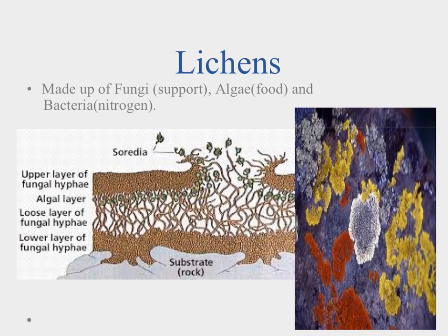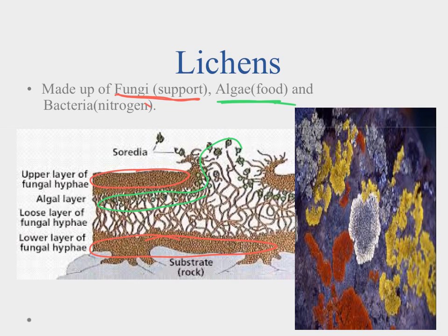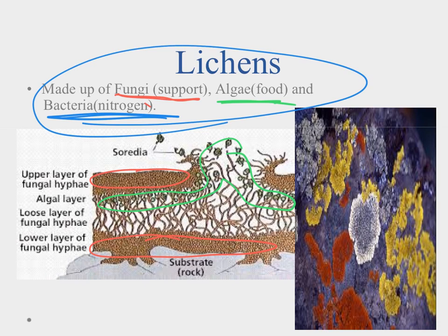The last group to discuss are the lichens, which are an interesting organism. They're categorized as one organism but are really made up of three different things: a fungal part which provides support and anchoring, an algae component which can do photosynthesizing and make their own food, and a bacterial component which gives them the nitrogen they need to live. Lichens generally tend to be the first organism into an unexplored ecosystem — like if a brand new island popped out of the ocean — because all three parts work together to allow them to survive. We can see them living close to rocks as well.